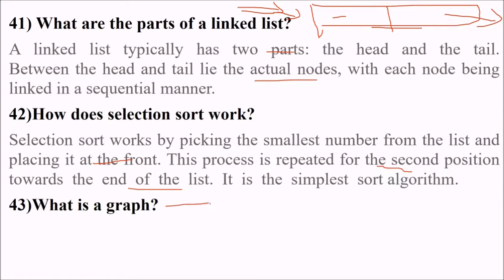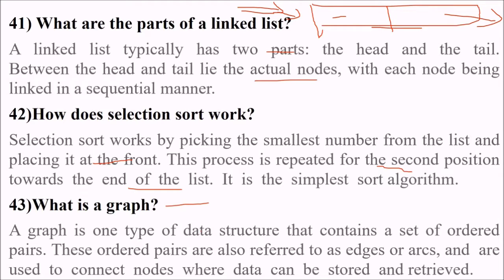What is a graph? It is a type of data structure that contains a set of ordered pairs. Graph has ordered pairs - two values. These ordered pairs are also referred to as edges or arcs and are used to connect nodes, which can be stored and retained.